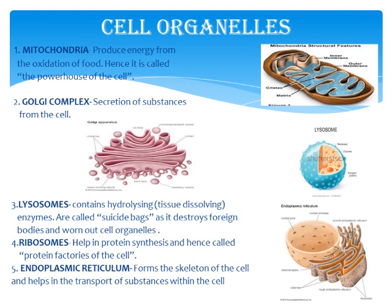Ribosomes help in protein synthesis — that is, they help in the formation of proteins — and hence they are called the protein factories of the cell. Next is the endoplasmic reticulum, or ER. In examinations, you should write the full name: endoplasmic reticulum. It forms the skeleton of the cell, helping form a tough structure so that the cell remains rigid.